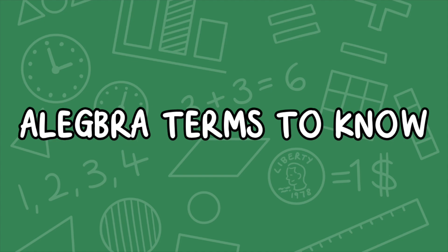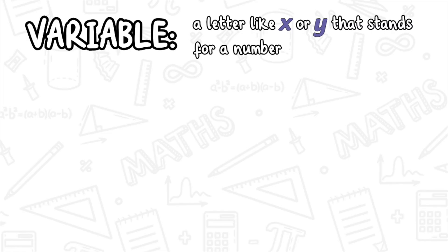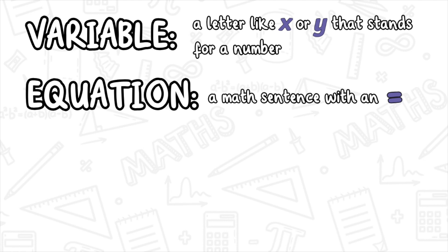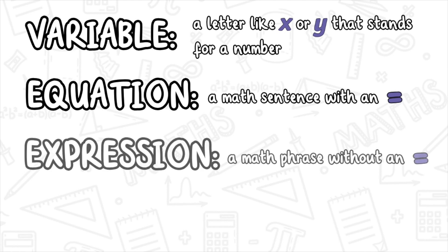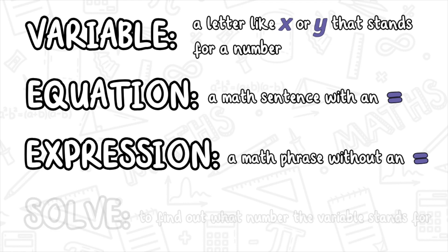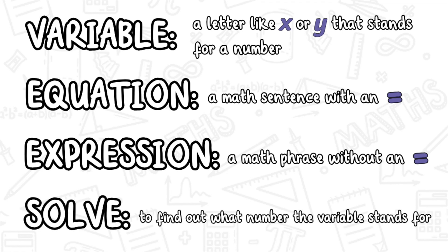Algebra terms to know. Variable: a letter like x or y that stands for a number. Equation: a math sentence with an equal sign. Expression: a math phrase without an equal sign. Solve: to find out what number the variable stands for.